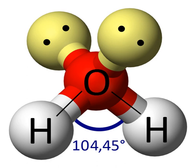Valence-shell electron pair repulsion theory is a model used in chemistry to predict the geometry of individual molecules from the number of electron pairs surrounding their central atoms. It is also named the Gillespie–Nyholm theory after its two main developers, Ronald Gillespie and Ronald Nyholm. The acronym VSEPR is pronounced either VESPER or VUSEPER. The premise of VSEPR is that valence-electron pairs surrounding an atom tend to repel each other and will therefore adopt an arrangement that minimizes this repulsion, thus determining the molecule's geometry.